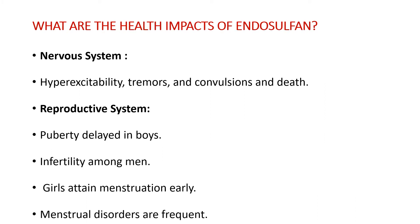Regarding the health impacts of Endosulfone, it affects both the nervous system and the reproductive system. Effects include hyper-excitability, tremors, convulsions and death. In terms of reproductive effects, puberty is delayed in boys, infertility is found among men, girls attain menstruation early, and menstrual disorders are frequent.